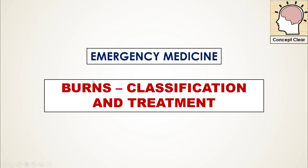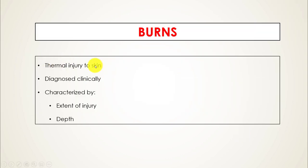Today we are going to talk about burns. A burn injury is a thermal injury to skin. Burns are diagnosed clinically by examining the patient and the skin. We characterize burn injuries based on two things: one is extent of injury, meaning how much of the total body surface area of the skin is involved, and the other is the depth of injury, meaning how far down into the epidermis, dermis, and lower tissues the burn injury involves.